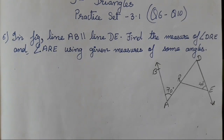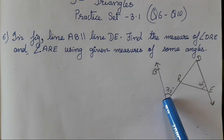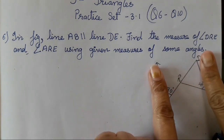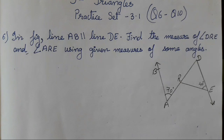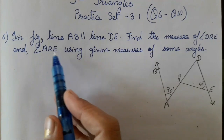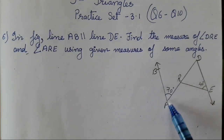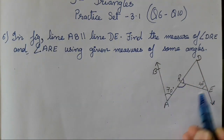Question 6: In the figure, line AB is parallel to line DE. Find the measure of angle DRE and angle ARE using the given measures of the angles shown in the diagram.